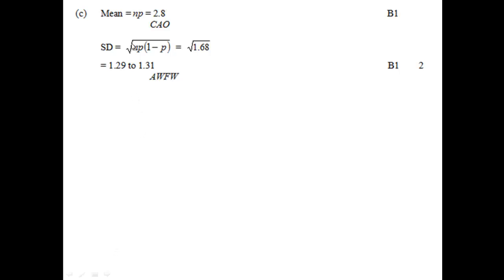For the final part of the question, N times P equals 2.8. It's just a B mark, so you just need the correct answer for that. And similarly, just a B mark for this part, so all you needed was the correct answer. So anything that falls within 1.29 and 1.31, we got 1.30.